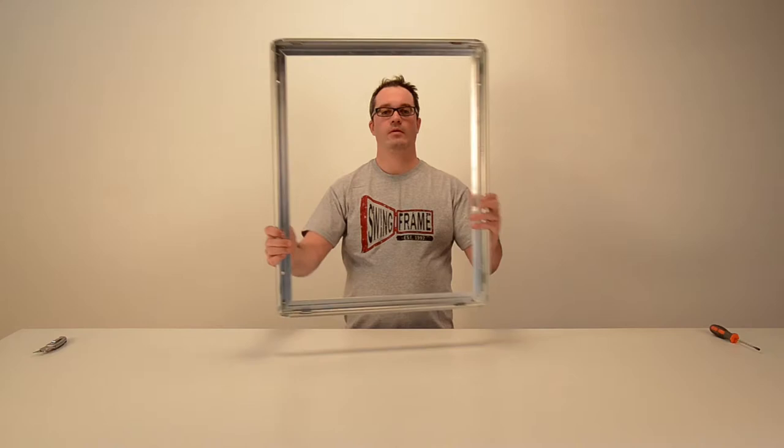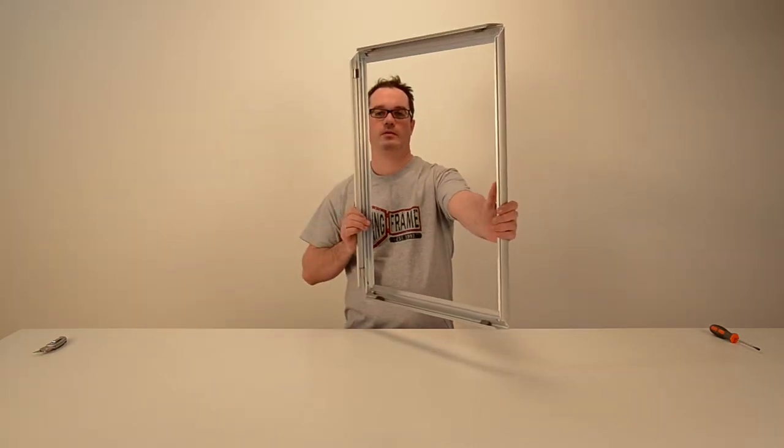First, snap open the snap rails of the frame. For bigger models, all four sides will snap open. For smaller ones, just two.